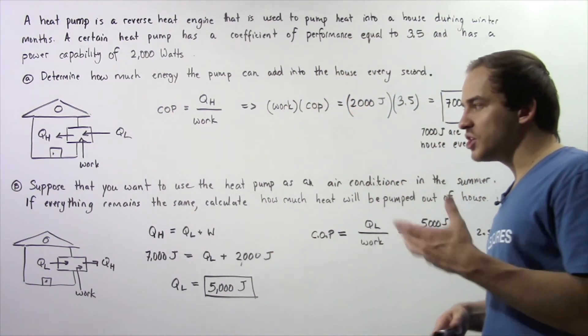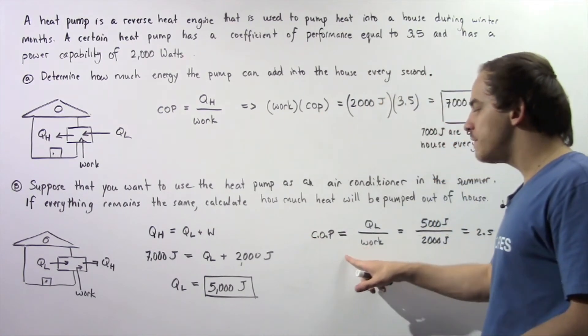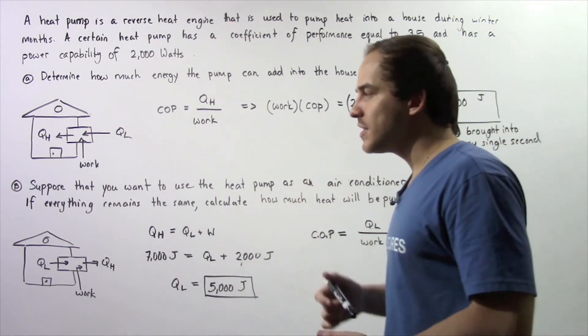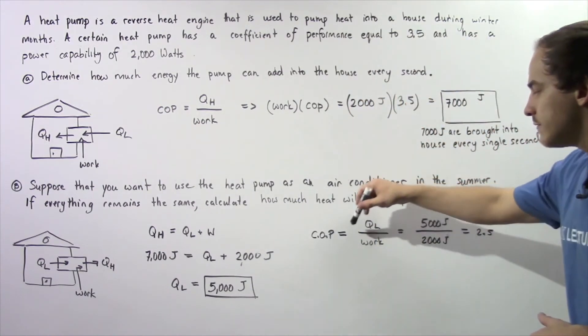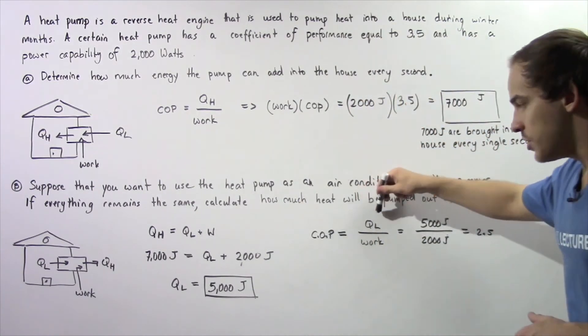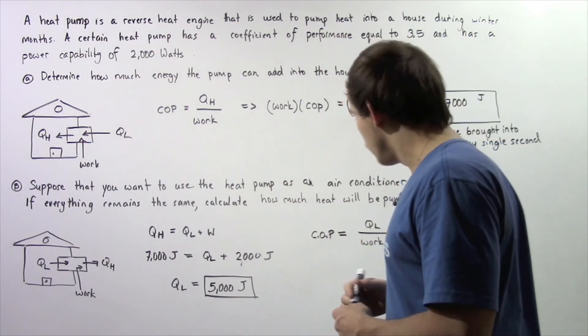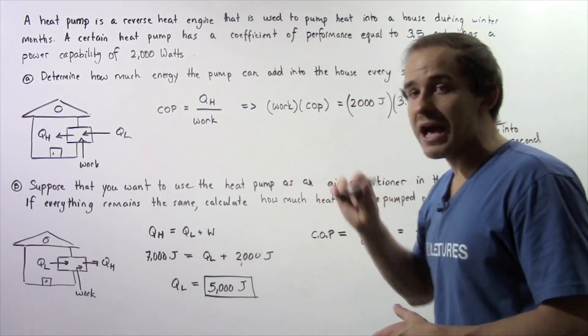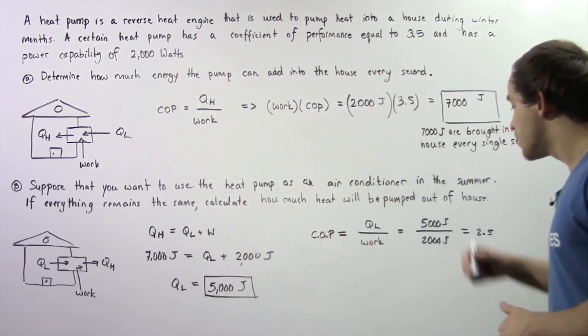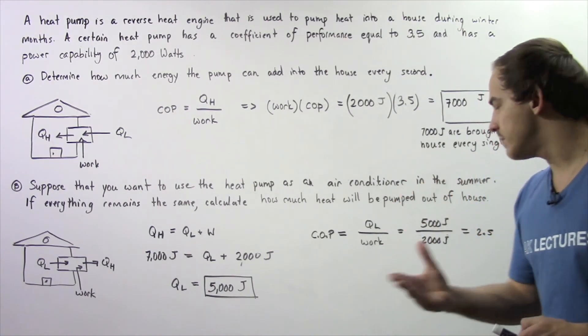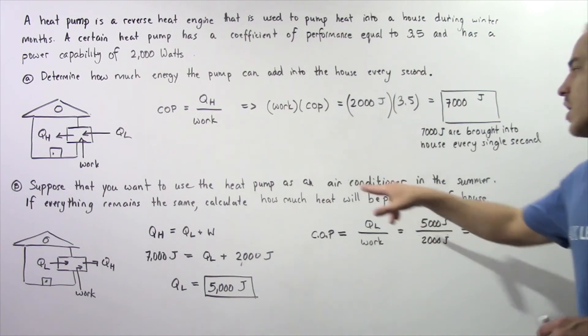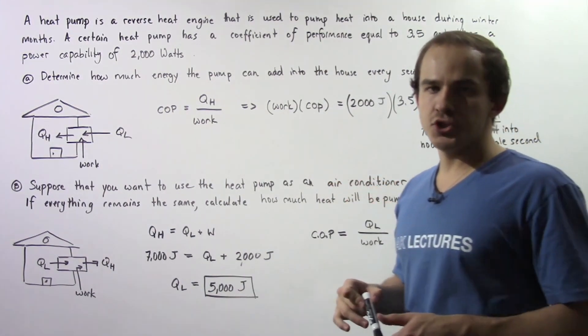If we wanted to, we can also determine the coefficient of performance of this air conditioner. That is given by QL divided by work. We know the QL is 5,000 joules and the work is 2,000 joules. So 5,000 divided by 2,000 gives us a coefficient of performance of 2.5 for this particular air conditioner.